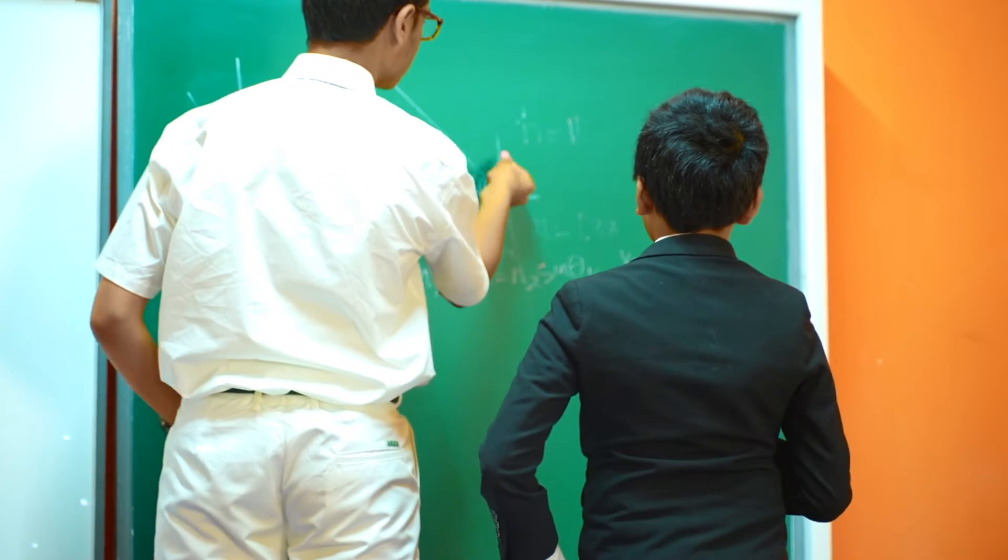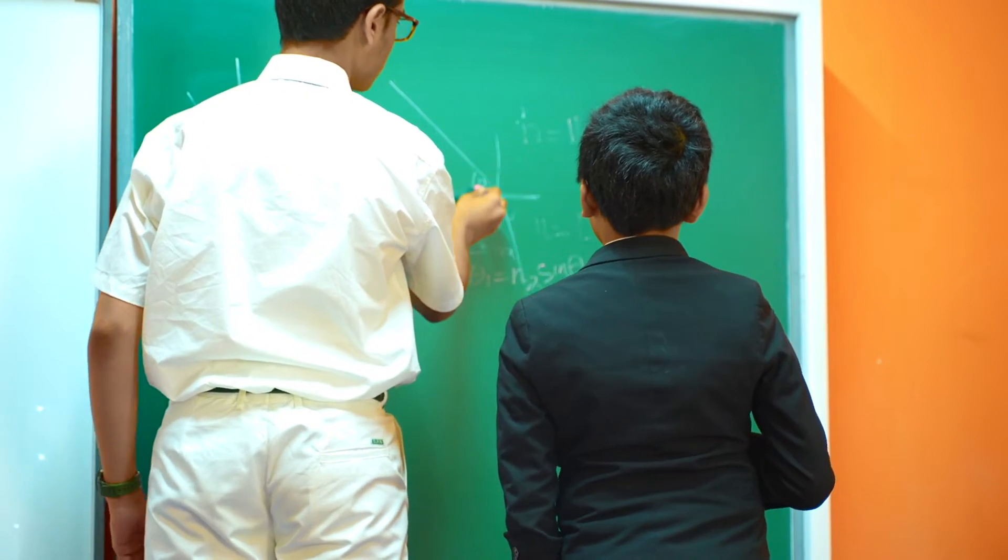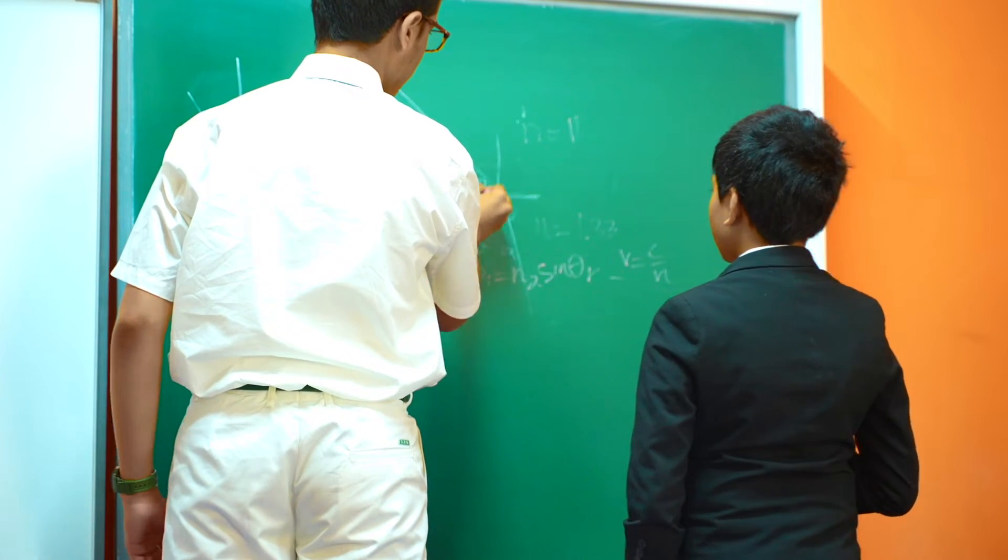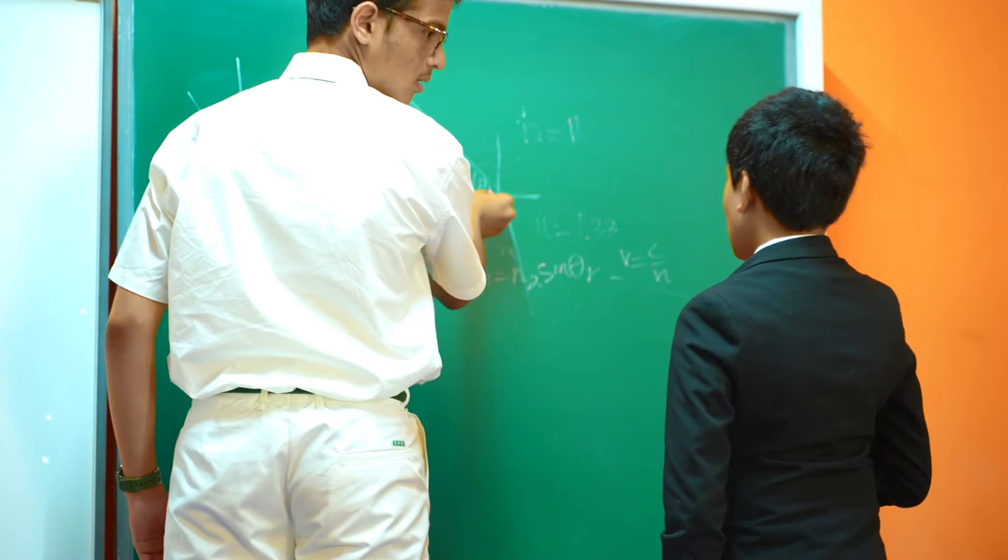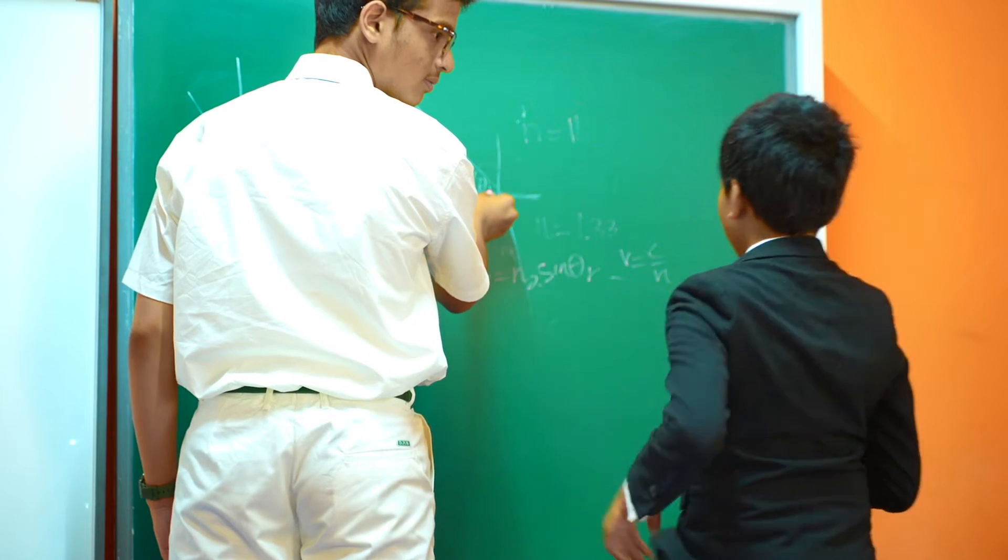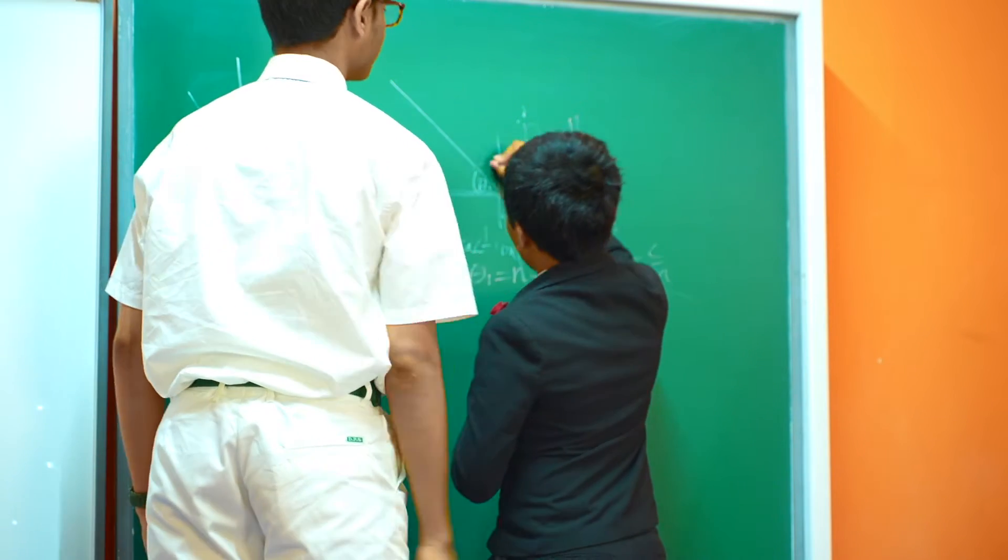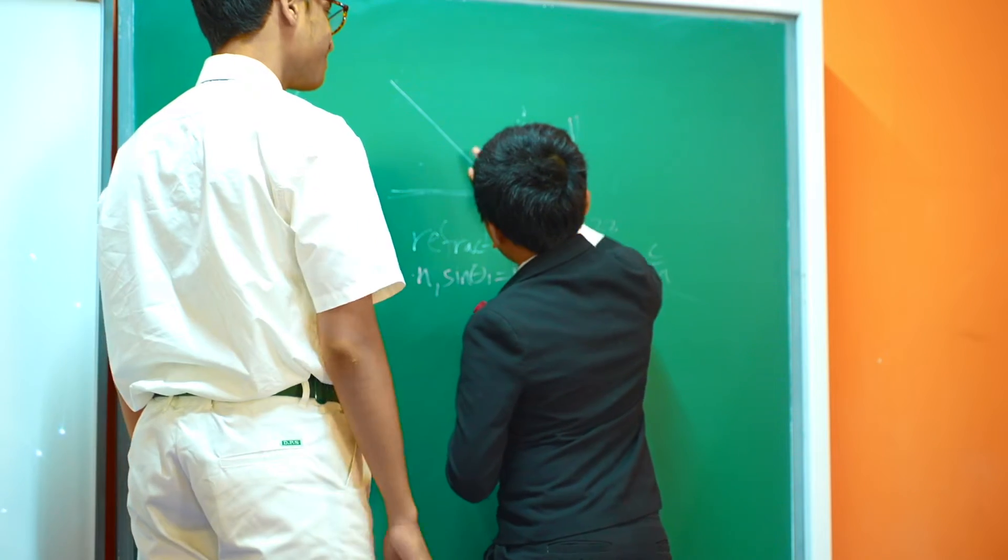So if I think this is theta i, I think we can find the angle of incidence which would be 90 minus theta i. Well, oh yeah, I forgot this is theta i actually. I am so sorry.